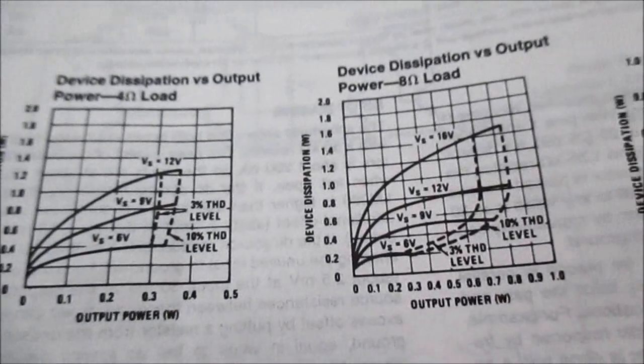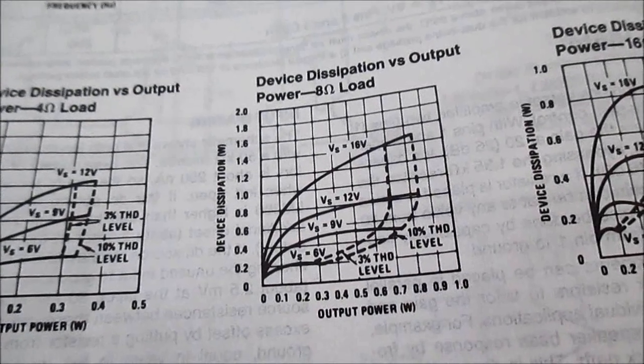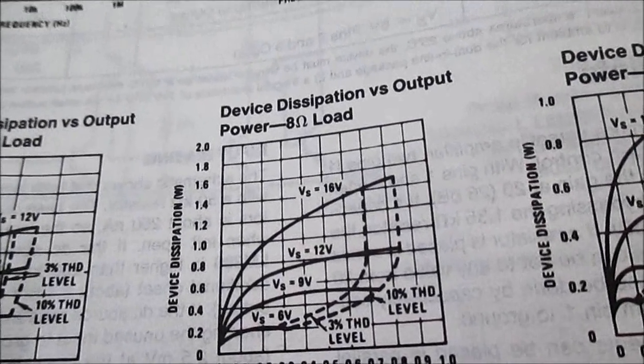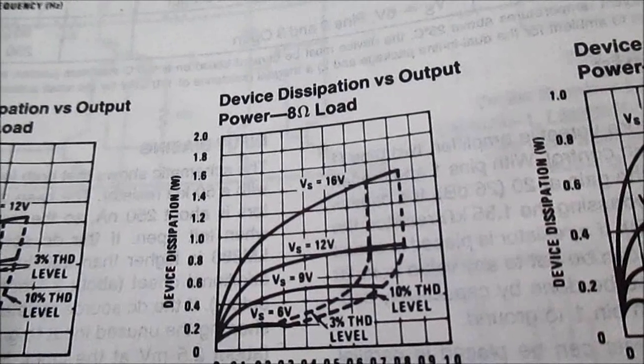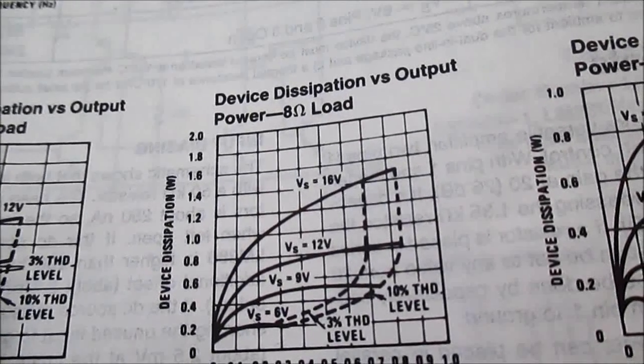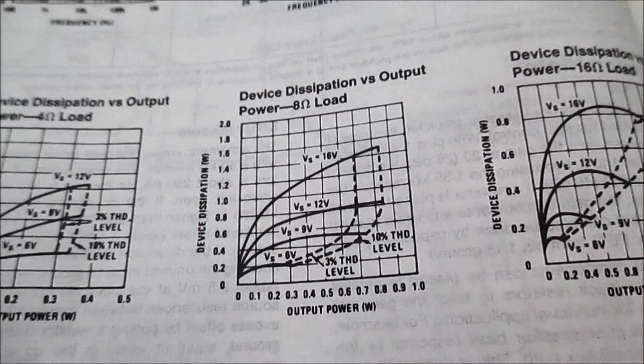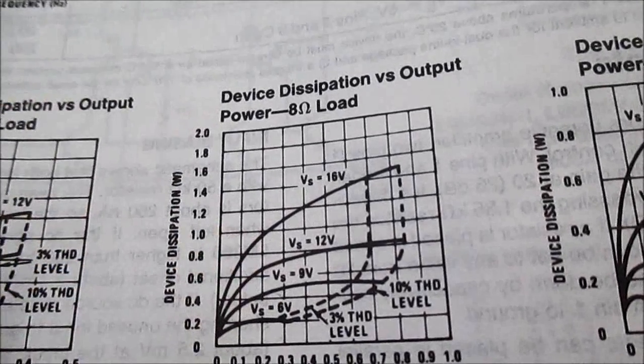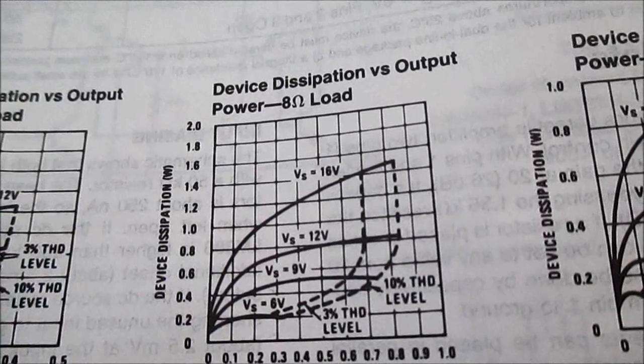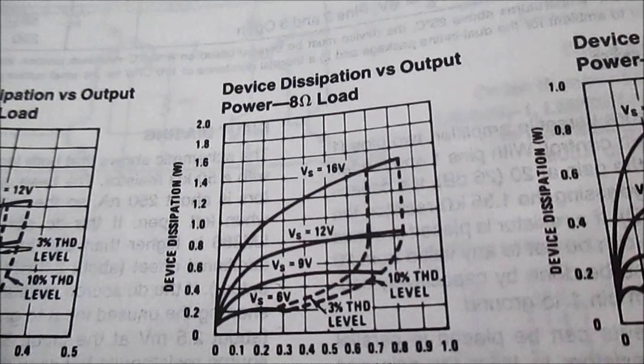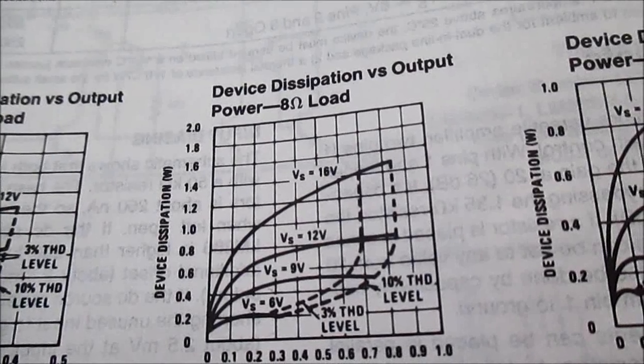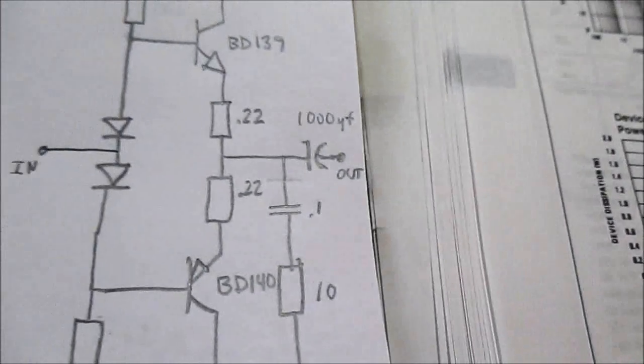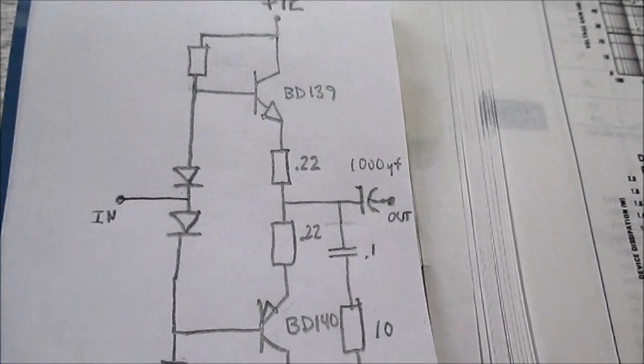When I measured it at 8 ohm loads, 9 volts, before clipping I was getting about 600 milliwatts or so. And if you put a 4 ohm load on it at 9 volts, it really didn't change much, very slightly. So if you want to get a little bit more power out of it, I was thinking building an output stage, keep it real simple, like this.